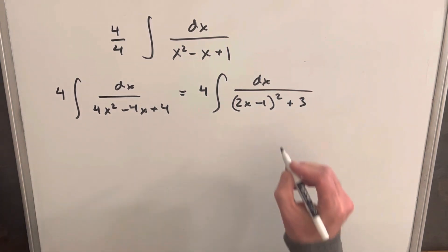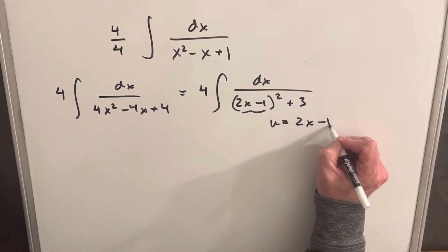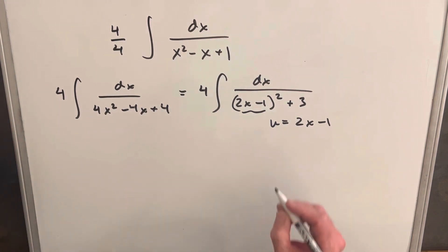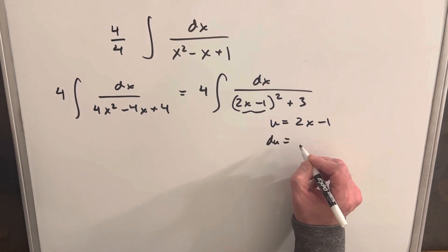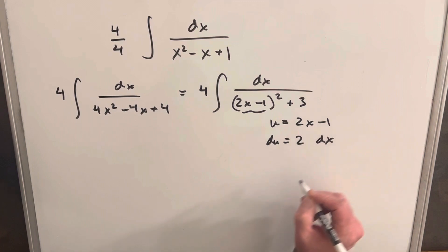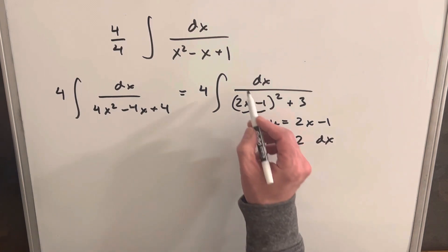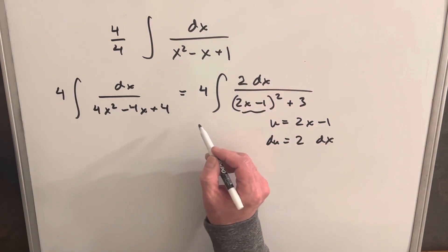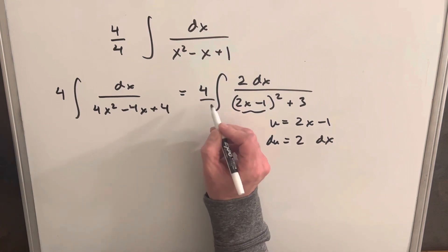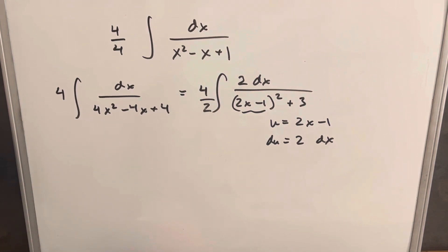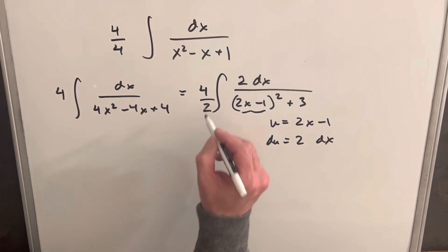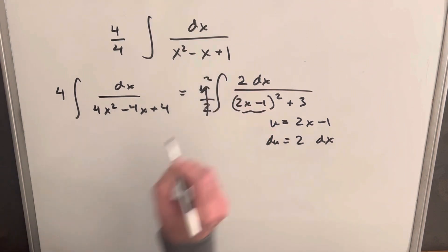Then from here we're in good shape for a u substitution. We're going to make our u this bit right here. We're going to call u equal to 2x minus 1. Then our du is going to be 2 dx. I can easily create my 2 up here, just kind of tacking it on, but we don't want to change it, so we'll divide by 2 as well.